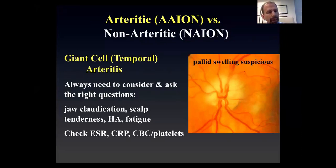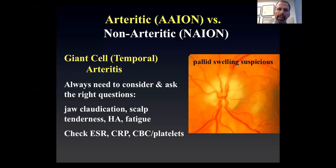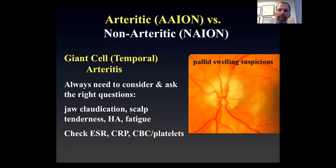Regarding evolving NAION, I will observe — I don't believe there's a proven treatment. They're looking at things like intravitreal Avastin and other medications, but nothing has been proven to help. Now, giant cell arteritis or temporal arteritis — for every 100 patients I see with AION, about 95 have NAION and five have arteritic giant cell arteritis. You always have to think about it, particularly if there's pallid optic disc swelling. In giant cell, the mechanism is different: there is no blood getting to the nerve, so it's unusual to see hemorrhages or hyperemic swelling — it's usually pale with possible cotton wool spots.